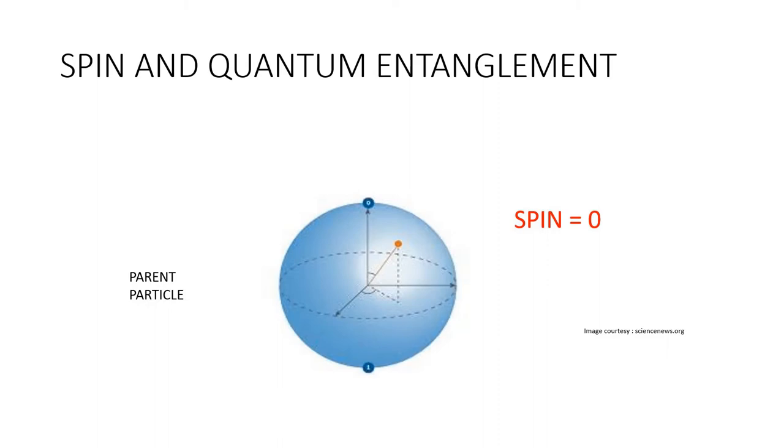Now, how is spin related to quantum entanglement? That's what I am going to discuss. In quantum mechanics and particle physics, spin is an intrinsic form of angular momentum carried by elementary particles. Spin is one of two types of angular momentum in quantum mechanics, the other being orbital angular momentum. By law of conservation of angular momentum, spin is conserved. Spin is constant.